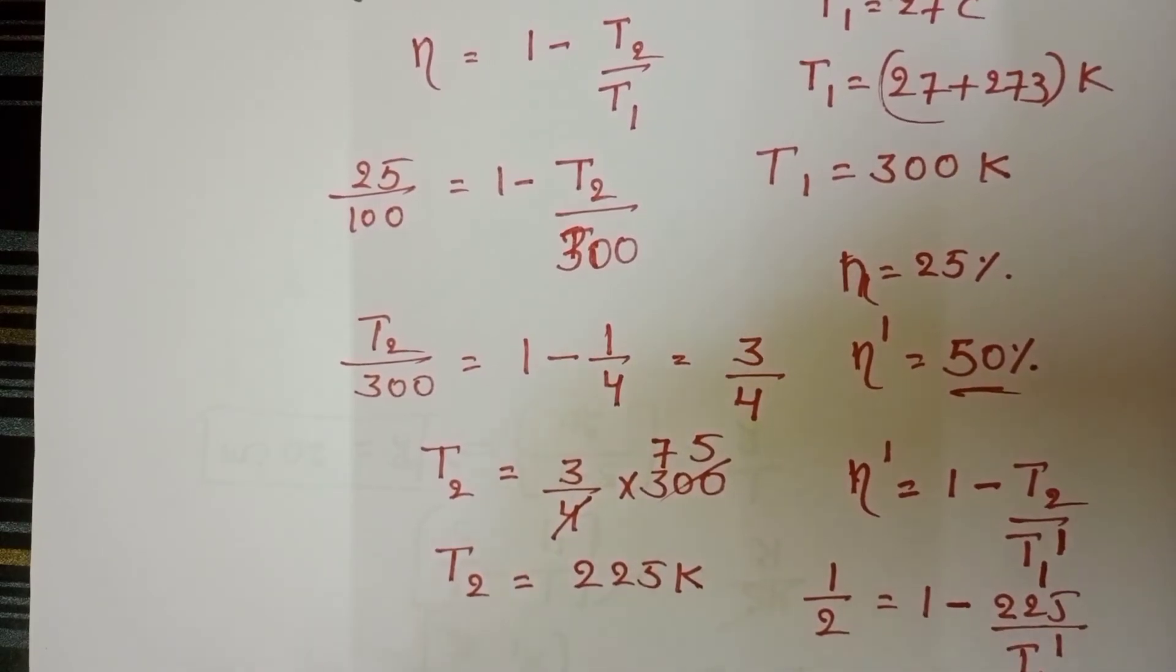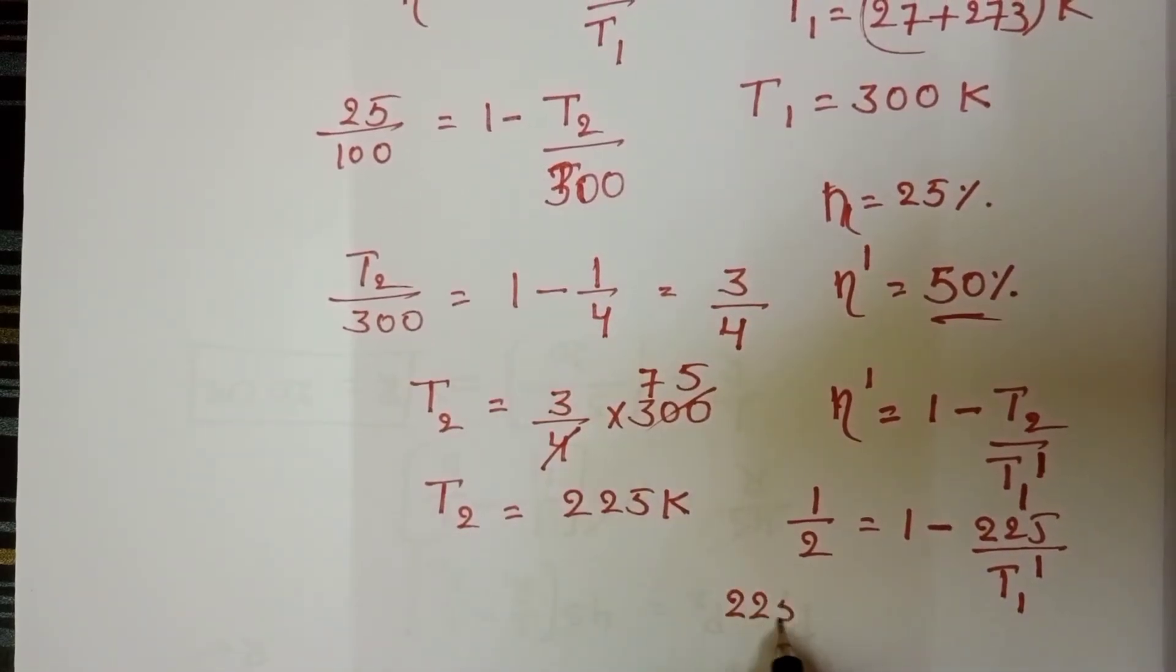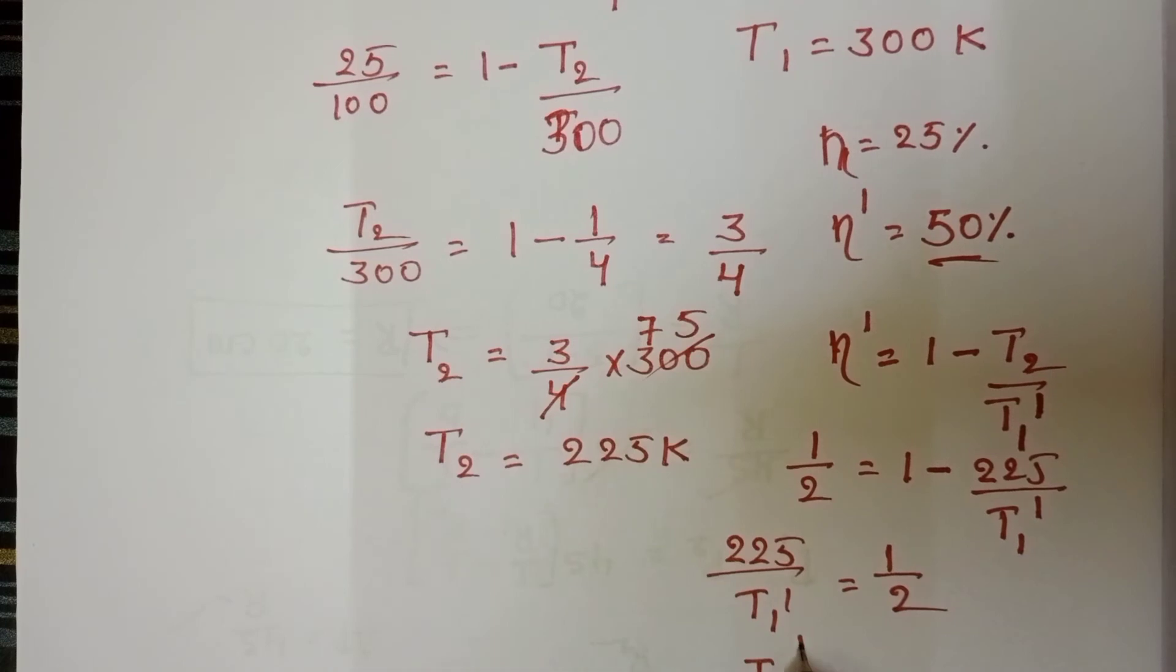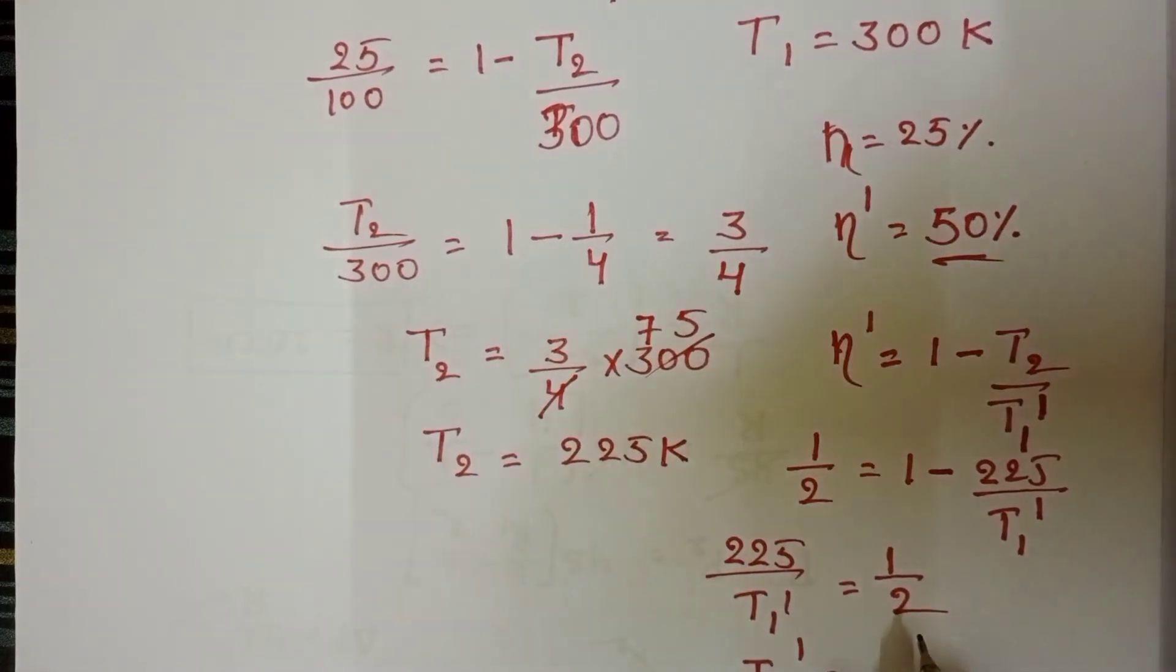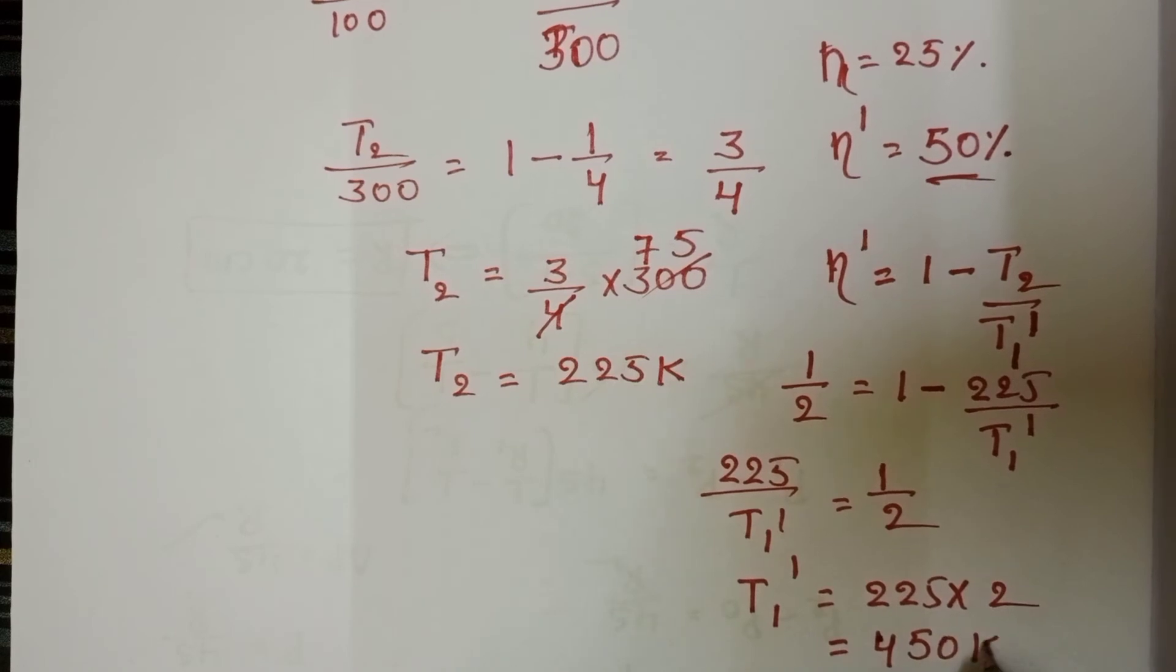We have to find the temperature of the source. From this, 225 by T1 dash equals 1 minus 1 by 2, equals 1 by 2. Now T1 dash equals 225 into 2, which is 450 Kelvin.